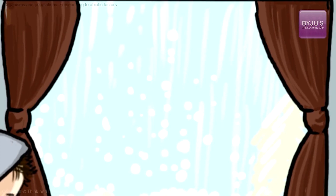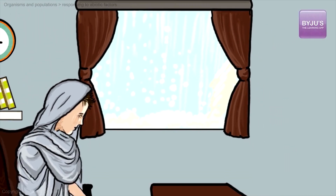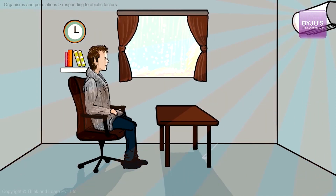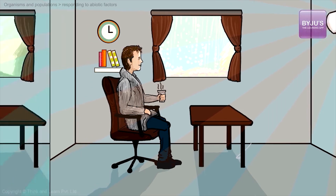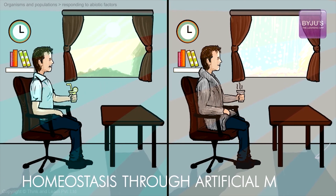Now, conversely, in the winter, people who experience snowfall don't just sit at home shivering under a blanket till it gets warm again. Life doesn't come to a standstill. Instead, we make use of space heaters, fur coats, and warm water to ensure that our internal temperature doesn't go down. Both these scenarios exemplify how we maintain our homeostasis through artificial means instead of physiological means.